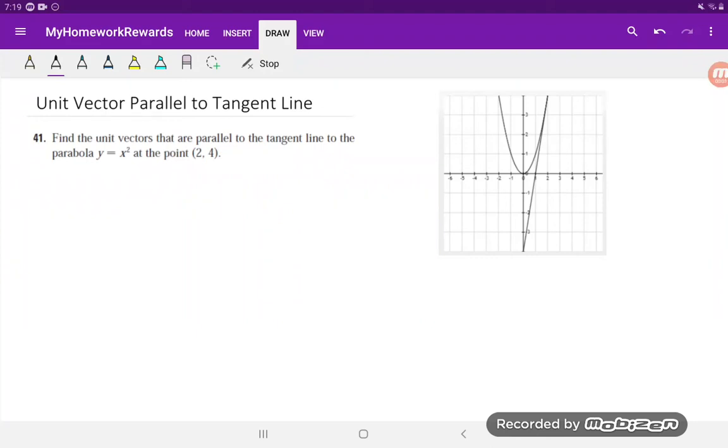Welcome to My Homework Rewards. Today we're going to do an interesting question. This question asks us to find the unit vectors that are parallel to a tangent line of the parabola y equals x squared at a specific point (2,4). This is question 12.2-41 from Calculus Early Transcendentals, 7th edition by Stewart. As always, you can download the full solution at myhomeworkrewards.com for free.